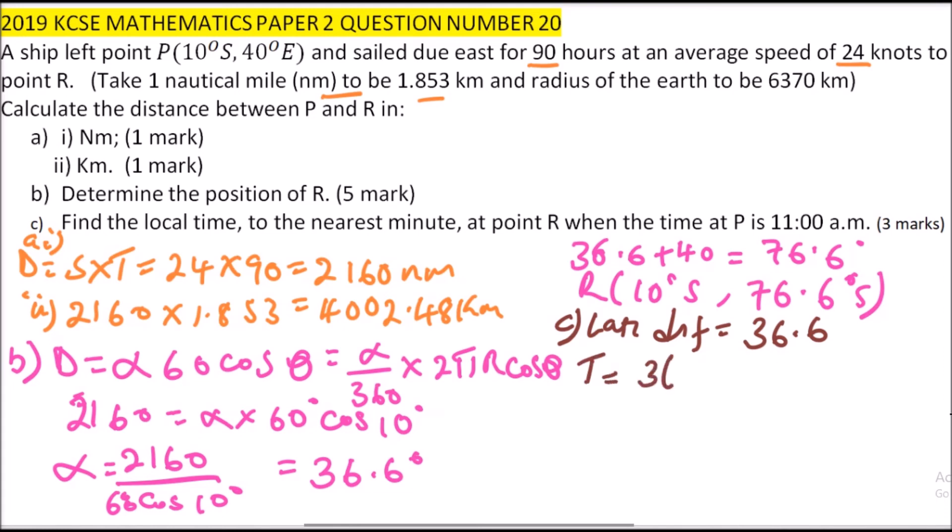that 36.6 multiplied by 4 divided by 60, and that will give you 2 hours, 2 hours and 26 minutes. So if the time at P is 11, you add 2 hours 26 minutes, so you get 6, 2, that will give you 1, so it is 1:26 p.m., so that is the time.